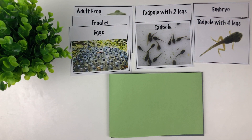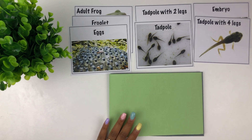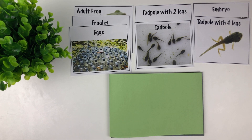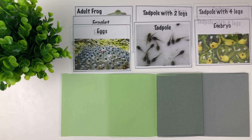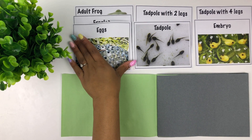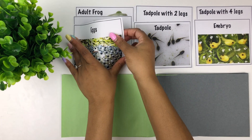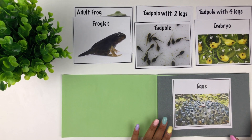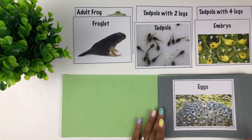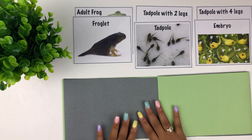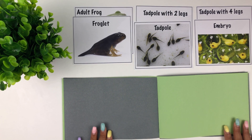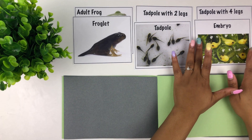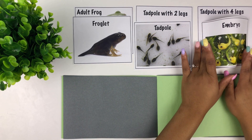Welcome friends, today we're going to be learning about the life cycle of a frog by making a booklet. Let's get started. The first stage is eggs. The second stage is embryo.